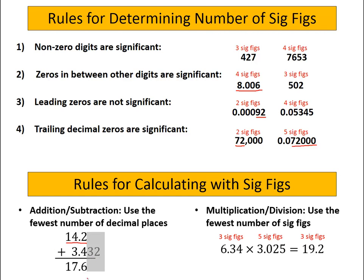But our final number shouldn't be more precise than the 14.2 number. And so we drop all of those other sig figs and we just end up with 17.6. So we keep everything to the tenths place, because that's where the significant figures ended in our least precise number.